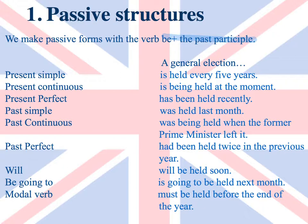Past continuous: a general election was being held when the former prime minister left. Past perfect: a general election had been held twice in the previous year. Future simple: a general election will be held soon. Going to future: a general election is going to be held next month. Modal: a general election must be held before the end of the year.